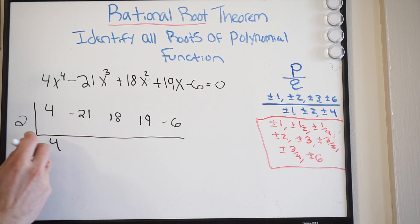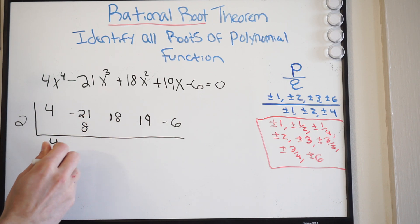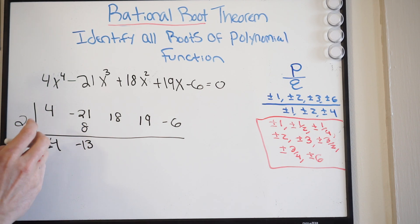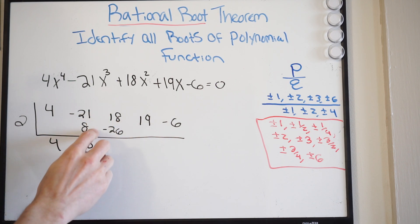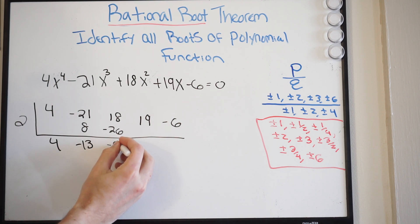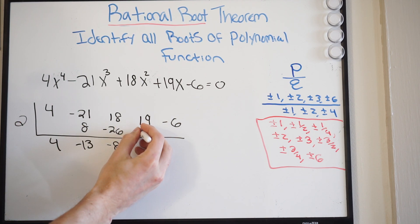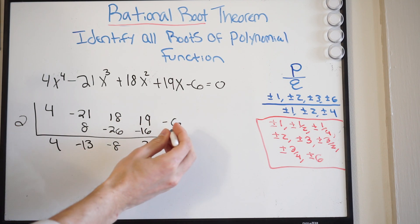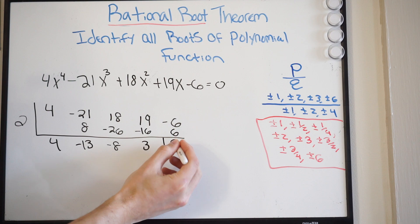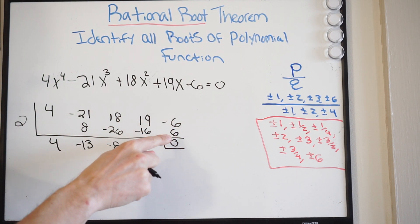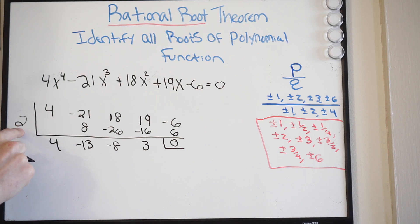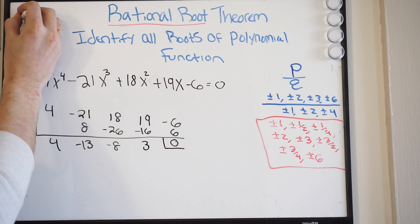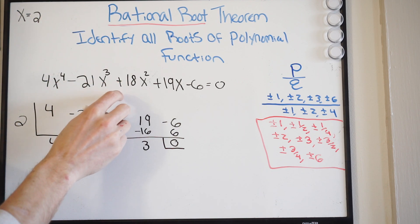We bring down the 4. 2 times 4 is 8. Negative 21 and 8 makes negative 13. Negative 13 times 2 is negative 26. Positive 18 and negative 26 makes negative 8. Negative 8 times 2 is negative 16. 19 and negative 16 is 3. 3 times 2 is 6. We can see that our remainder here is 0, so this tells us that 2 is in fact a zero or a root of this function. Let's write it up here — 2 is definitely a root.